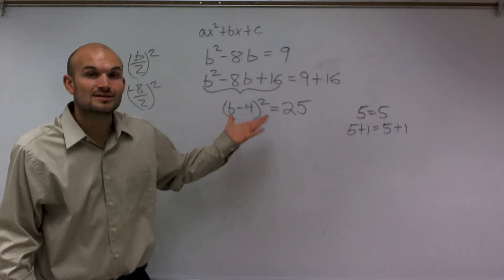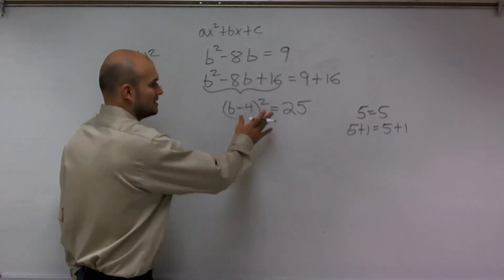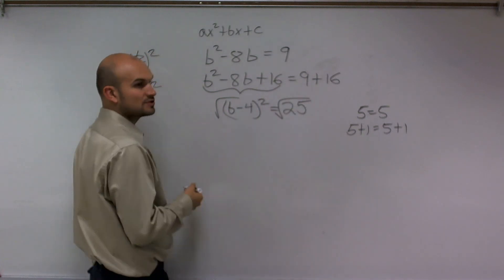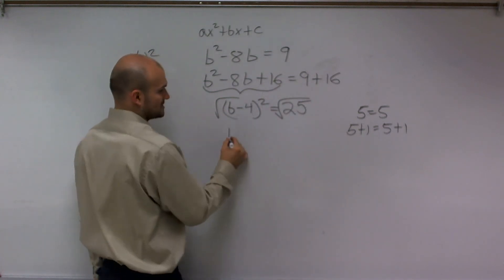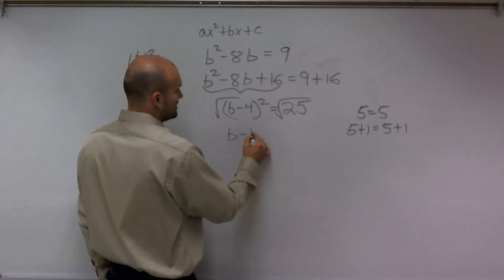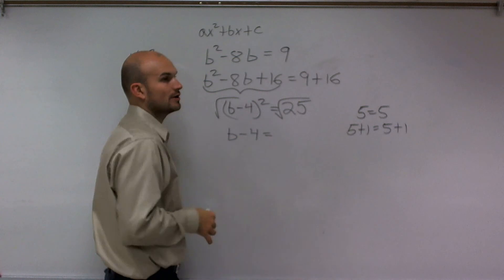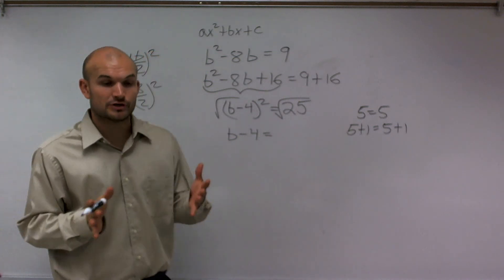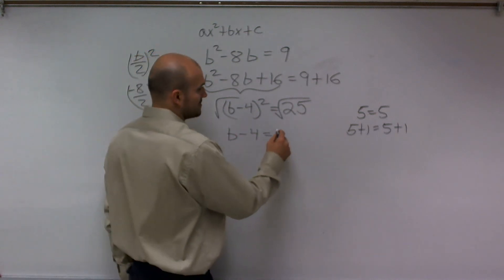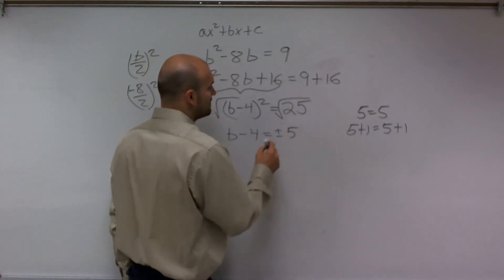Now we can solve this using the square root property. I'll take the square root on both sides. The square root and square are inverse operations - they'll cancel each other out. So b minus 4 equals the square root of 25. Make sure when you introduce the square root that you include the positive and negative value, so I'm going to have plus or minus 5.